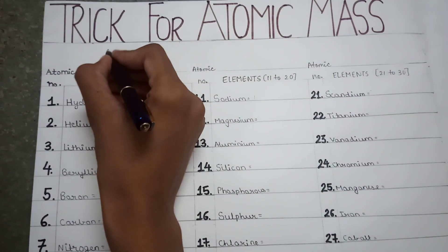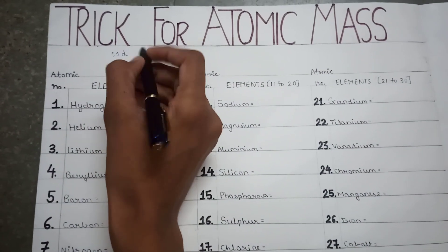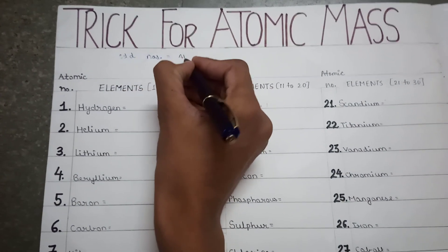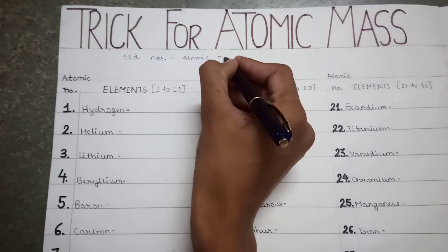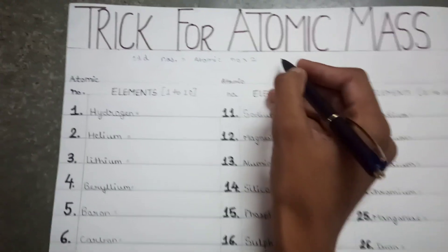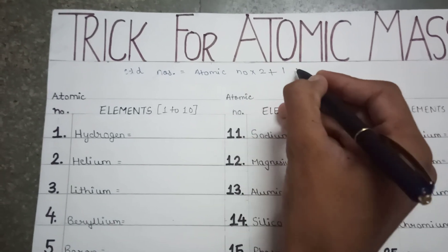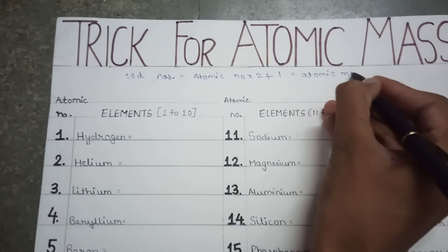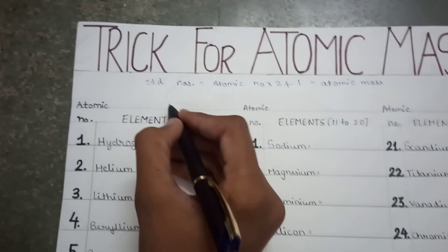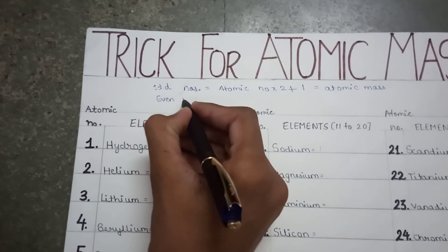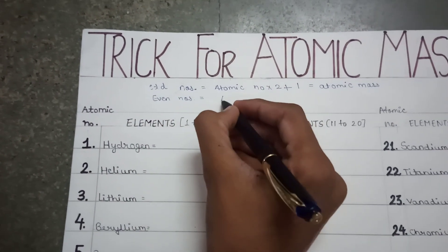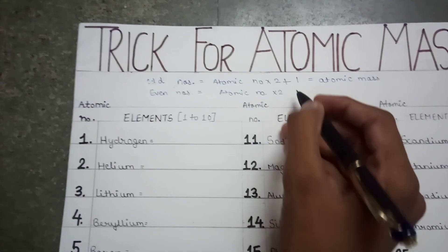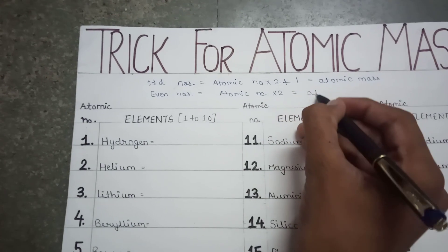For odd numbers, you have to write: atomic number into 2 plus 1, and you will get the atomic mass. For even numbers, you have to do atomic number into 2 and you will get the atomic mass.